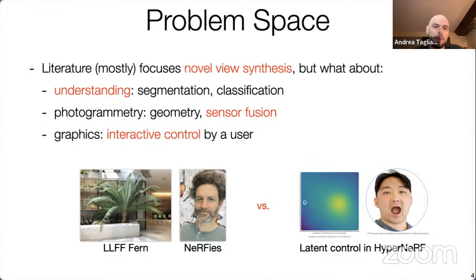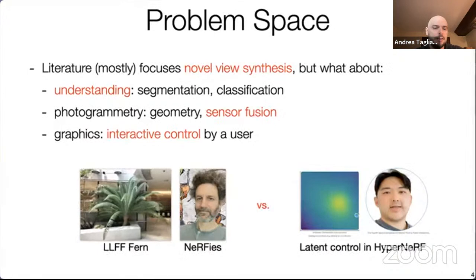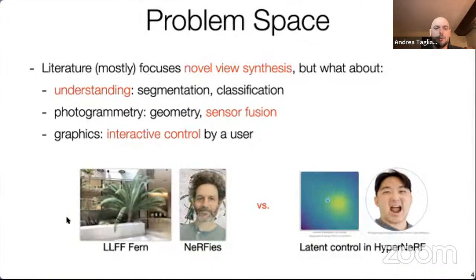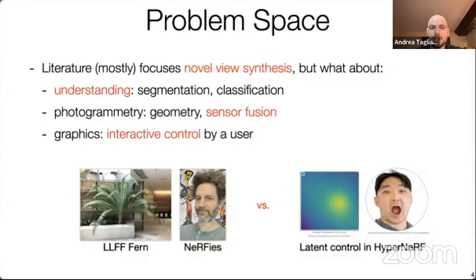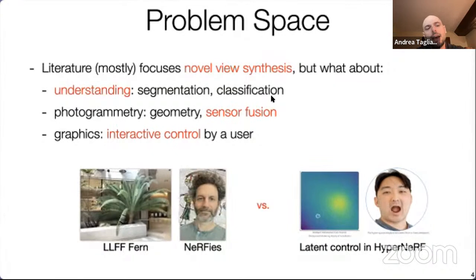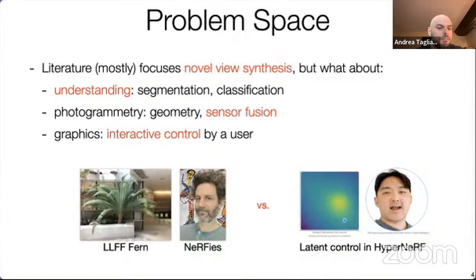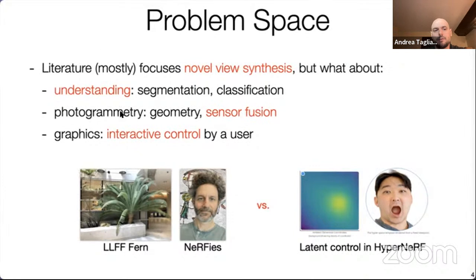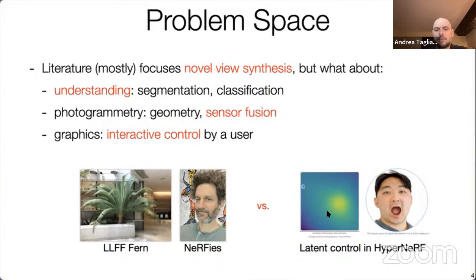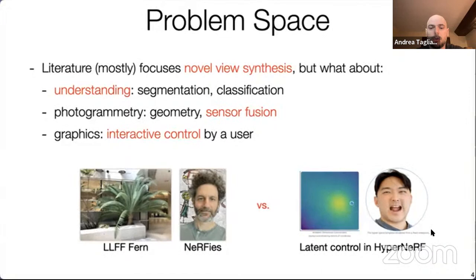Most of the literature focuses on novel view synthesis — taking a scene, training from a set of images, and rendering from a new viewpoint. But this is not what computer vision is. Computer vision mostly wants to do understanding: segmentation, classification, and so on. What about photogrammetry, sensor fusion, and bringing different sources of supervision into a common ground? And what about computer graphics — interactive control and controllability of neural fields, as hinted at by HyperNeRF?